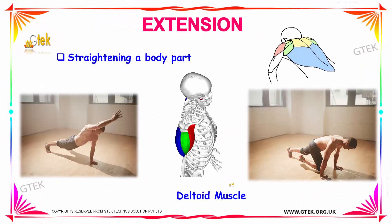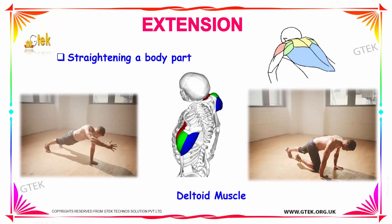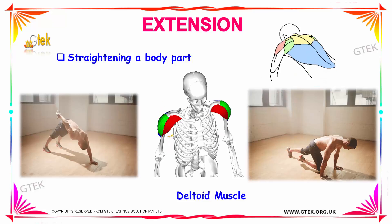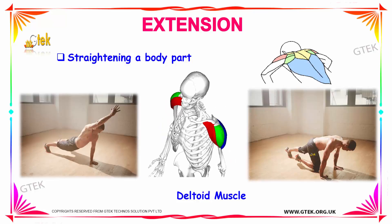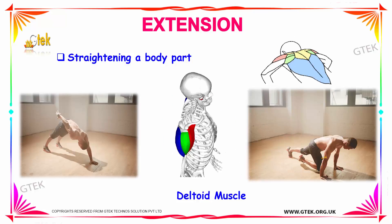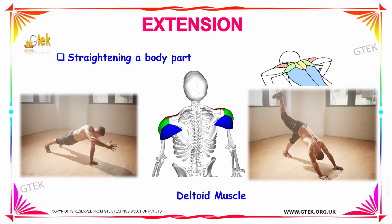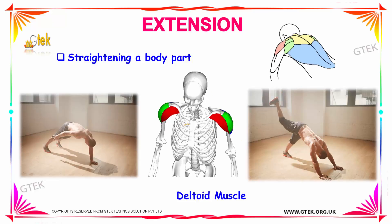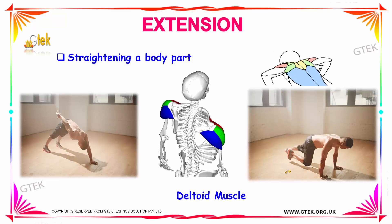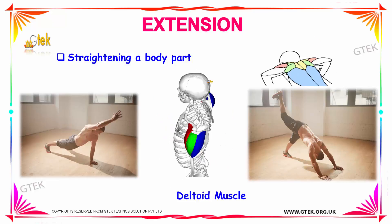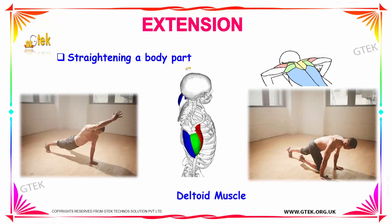The next movement is extension, which is nothing but straightening a body part. You can see here a person can straighten a body part, emphasizing the muscles over the shoulder, and that is the deltoid muscle. Using the deltoid muscle a person can straighten a body part, and the movement is known as extension.